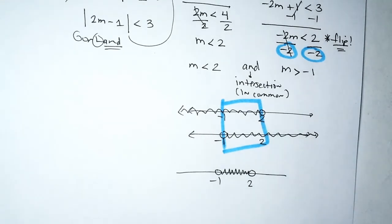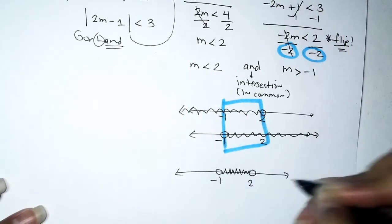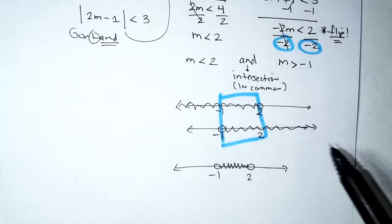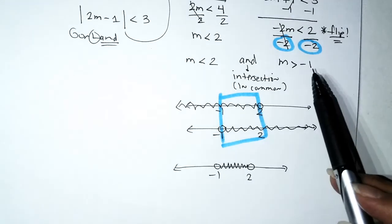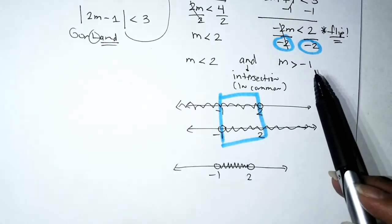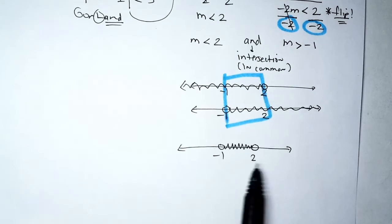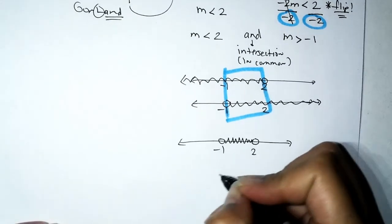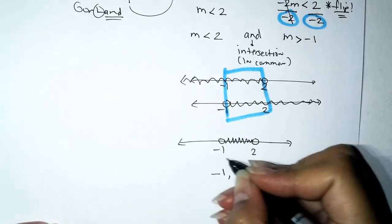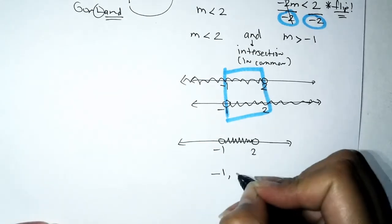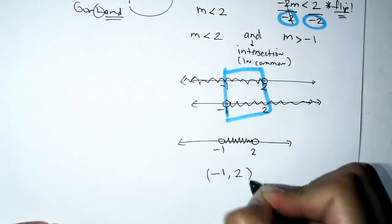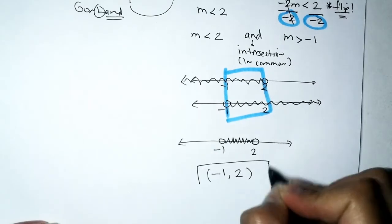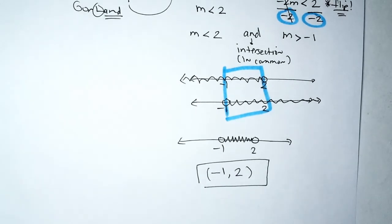In interval notation, the solution set is (−1, 2) — both endpoints excluded. That's our first problem done.